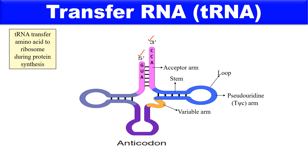tRNA also has a small variable arm. The anticodon arm consists of five paired and seven unpaired nitrogenous bases; three of the unpaired bases form the anticodon, which is complementary to the codon of messenger RNA. Finally, the dihydrouridine arm (DHU arm) is the site for attachment of the tRNA synthetase enzyme during protein synthesis — the enzyme binds to this DHU arm.